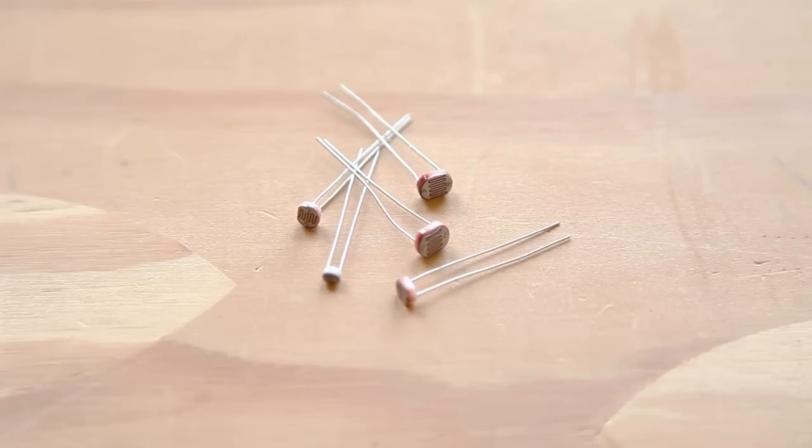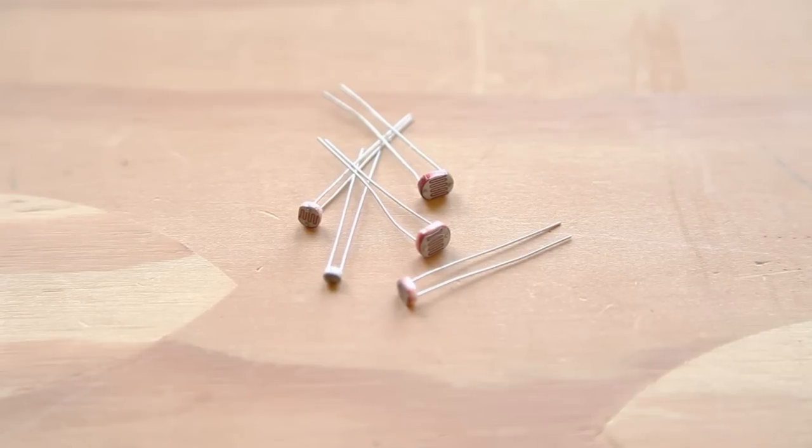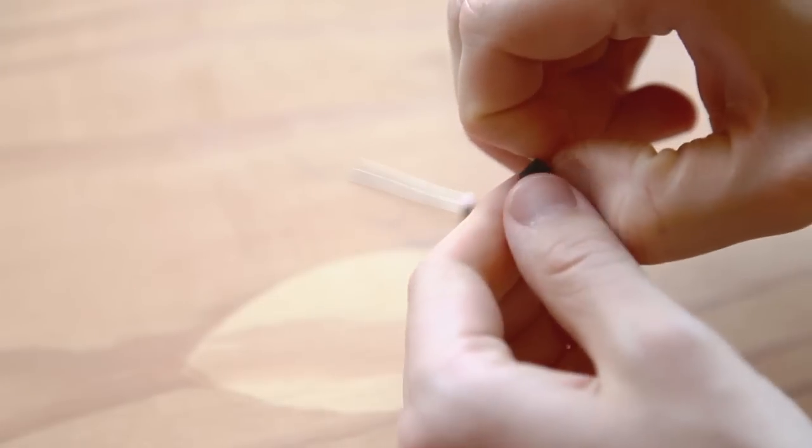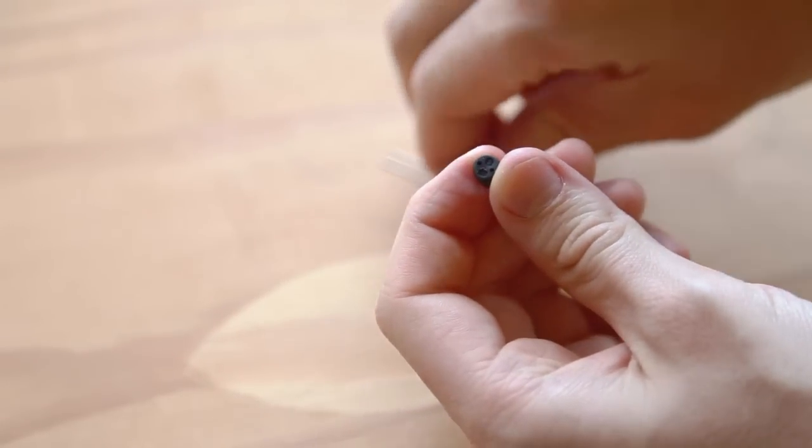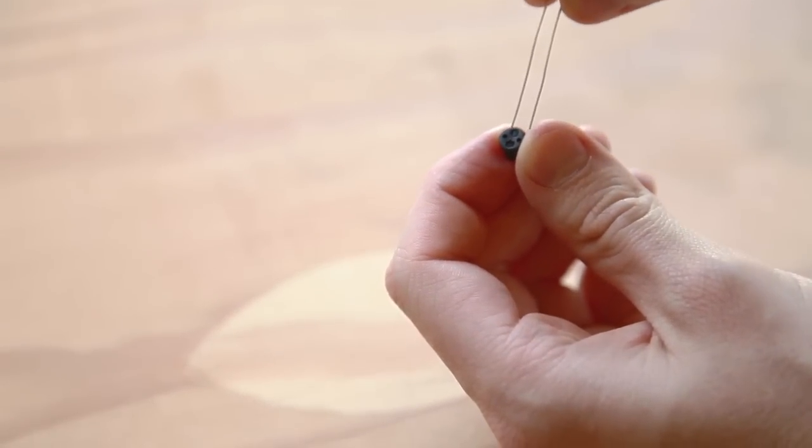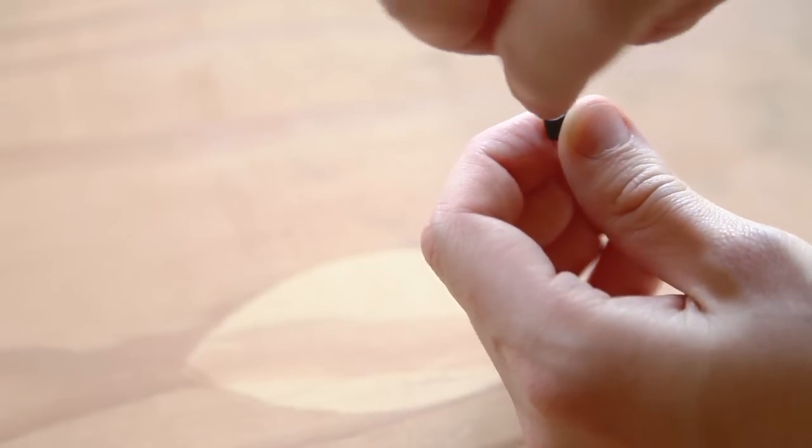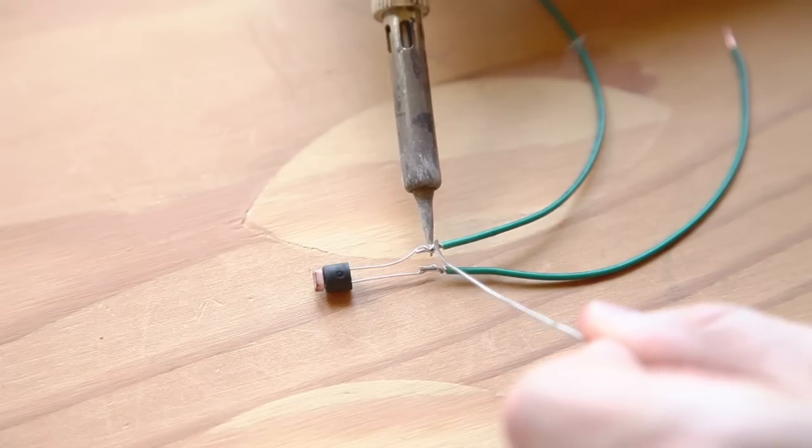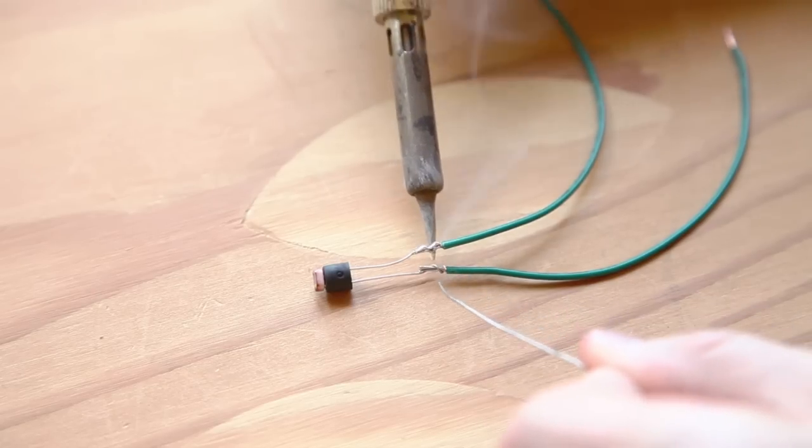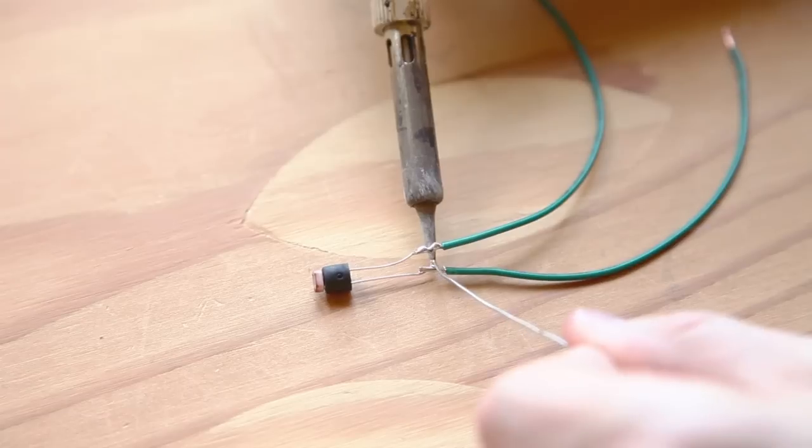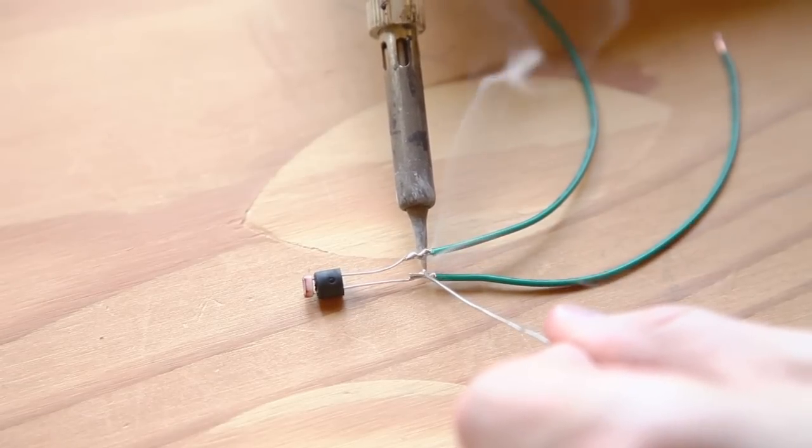These cadmium sulfide photoresistors come in packs of five. We'll use one of the medium-sized resistors. Remove the rubber insert from the LED holder. Guide the legs of the photoresistor through the holes in the insert until it's seated against the insert. Cut two four-inch green wires. Strip each end and tin one side. Solder the tinned ends to the photoresistor leads.